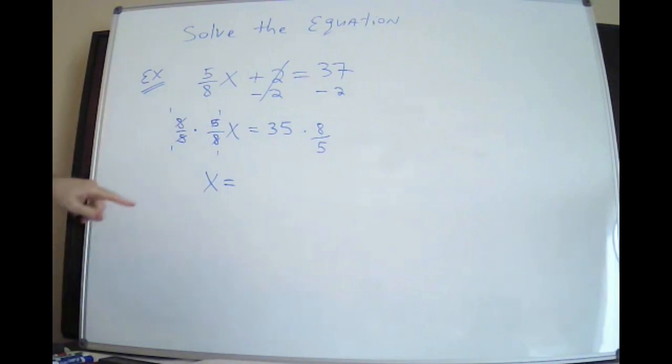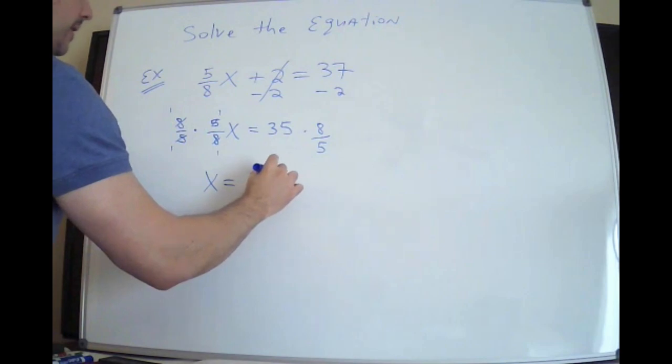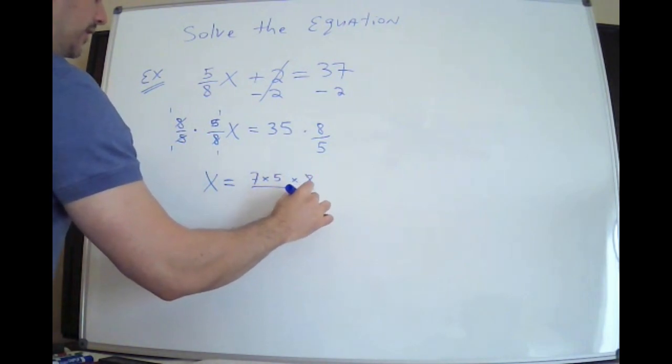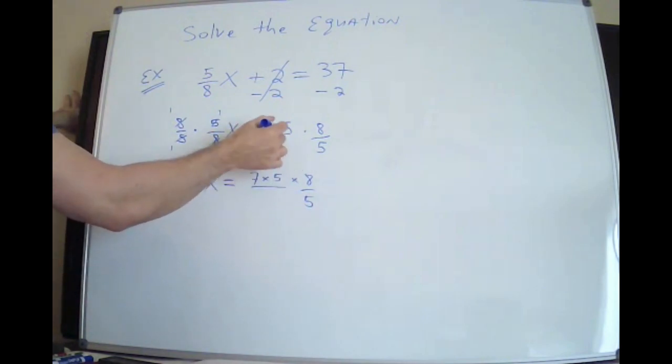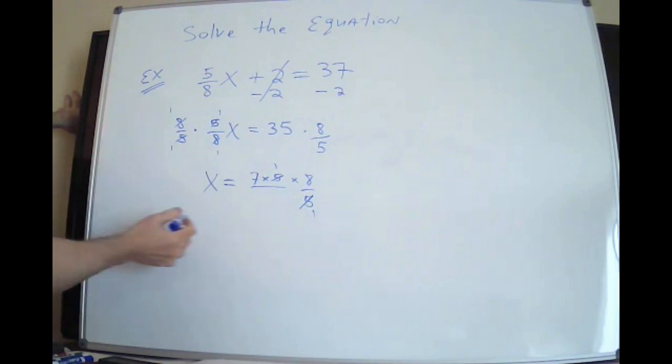Now, do I really want you to do 35 times 8 and then divide that by 5? I don't think so. So remember, 35 is 7 times 5, right? Well, hopefully you know this. So I'm going to divide 35 by 5 first, which gives me 7. And then I'm going to do 7 times 8, which is way easier. 7 times 8 is 56.